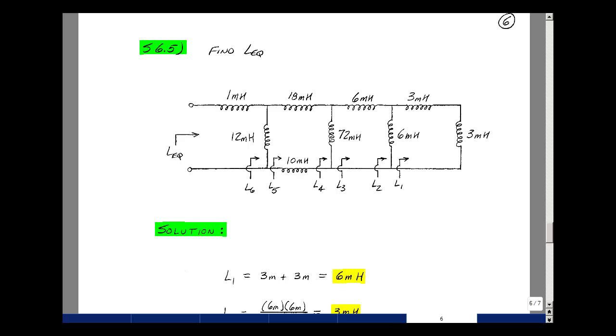Now, inductors are like resistors. When they're in series, we're just going to add their value, and when they're in parallel, we're going to take them two at a time, product over sum. So let's start right-hand side here and work our way to the left.